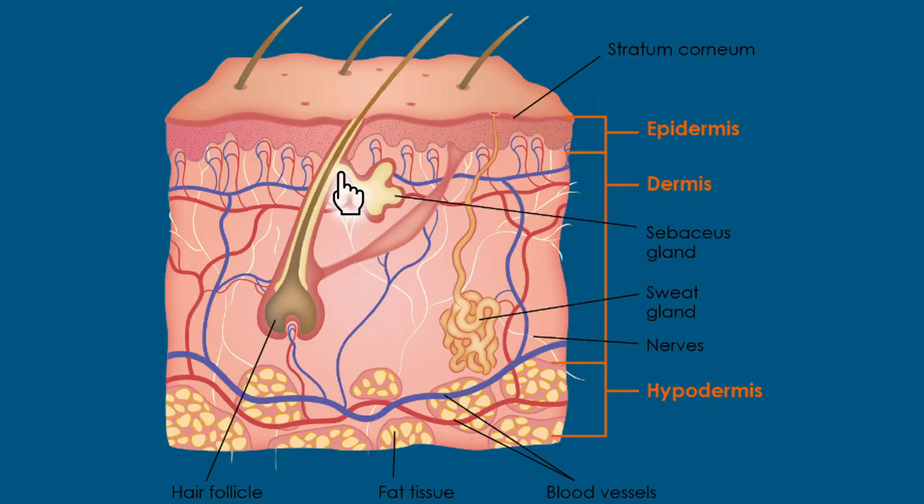So how does acne form? Acne usually forms from clogging of the oil glands. You have oil glands in your skin that help in the creation of sebum — the skin oil. When it comes to draining that sebum from the oil glands, it usually comes through a duct that drains into the hair follicle, and from the hair follicle it goes up through the hair shaft, comes out, and drains onto your skin to keep it supple.